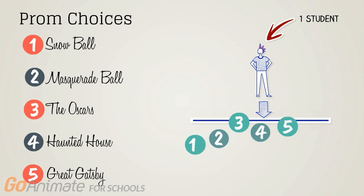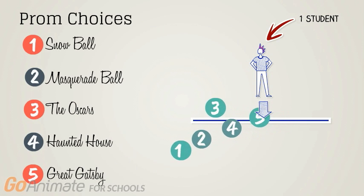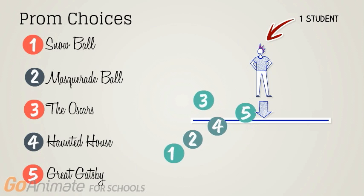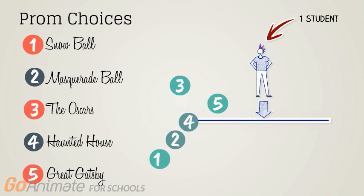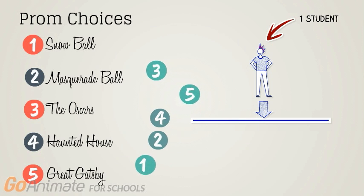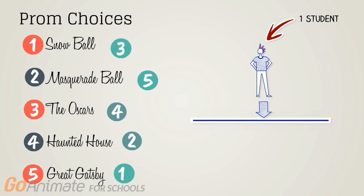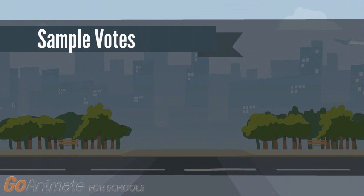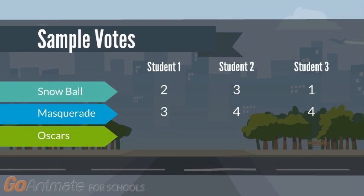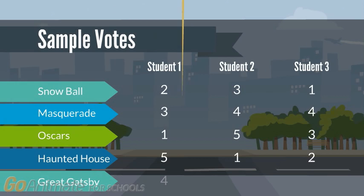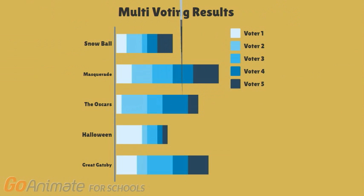Each vote is worth a certain amount of points on a scale of one to five. Each student rates their top choices: the favorite choice is given five points, the second favorite four points, the third three points, and so on. Now let's say the students have voted — let's see the results. All of the votes are tallied for a total score. The winner is the masquerade ball!